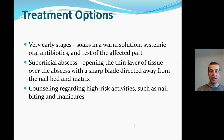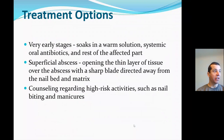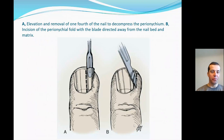Treatment options in early stages include soaks in warm solution, systemic oral antibiotics, and rest of the affected finger. In case of a superficial abscess, opening the thin layer of tissue over the abscess with a sharp blade directed away from the nail bed and matrix allows drainage and resolution of symptoms. Counselling regarding high-risk activities such as nail biting or recommendation to use clean instruments for manicure is also important. If infection is going under the nail plate, lifting that specific part of the nail plate is beneficial to allow complete drainage. The incision should be directed away from the nail bed and its matrix.